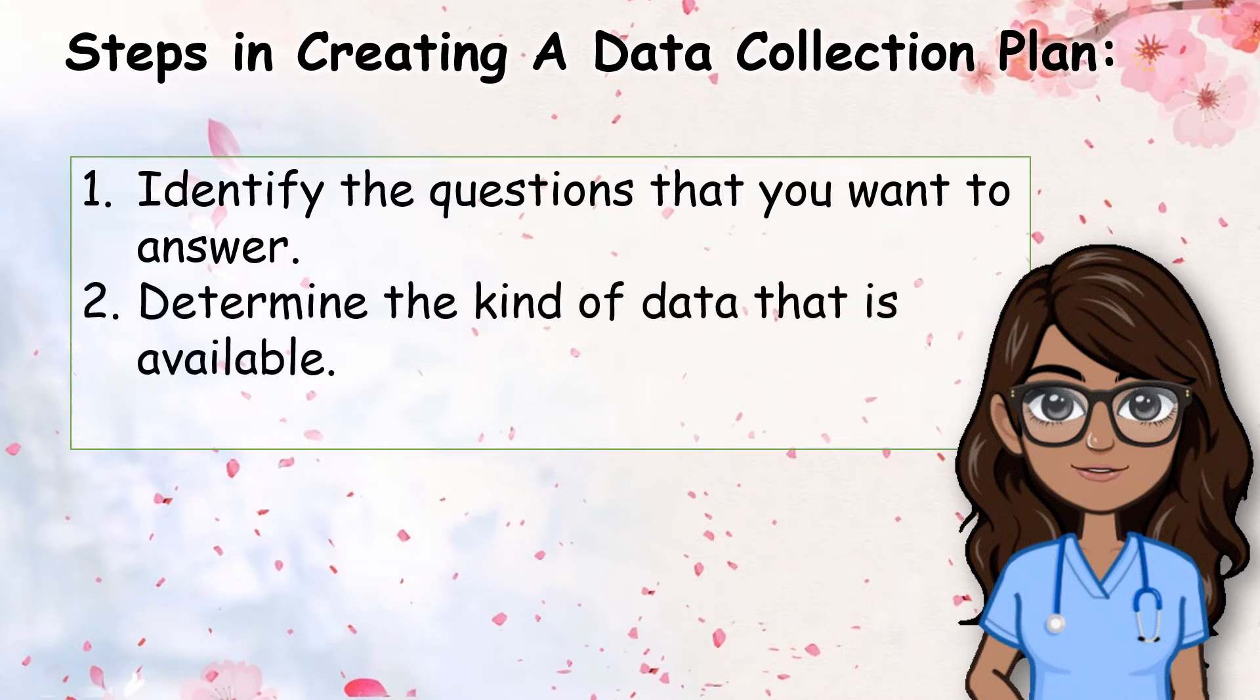Step two: determine the kind of data that is available. As a researcher, you must find out what kind of data is available to collect. You must list all the data points that are needed to answer the questions the research is centered on. You may refer to the types of research data in the earlier discussion.